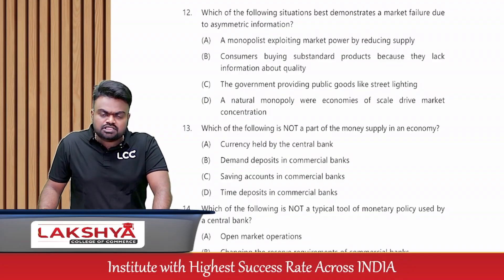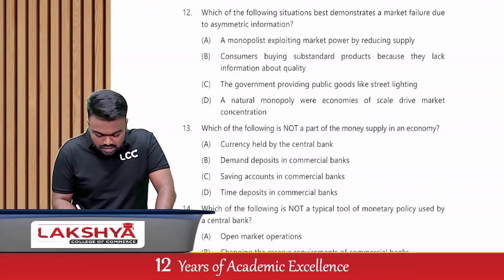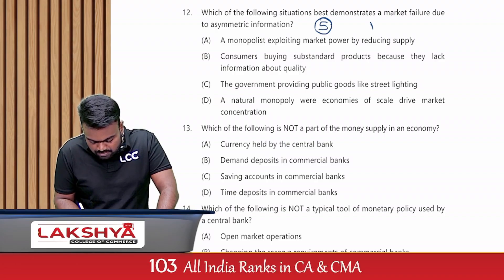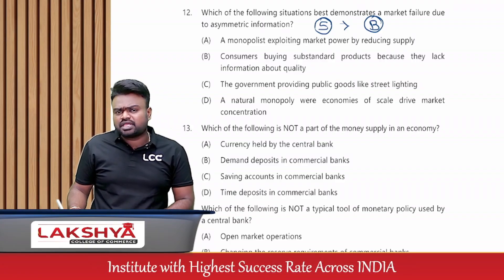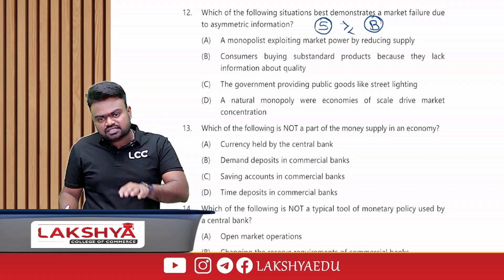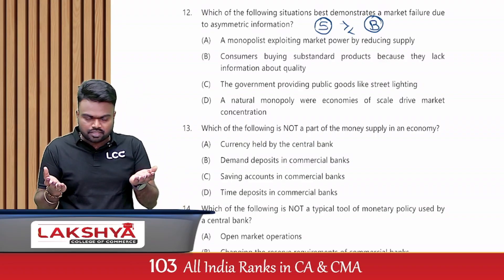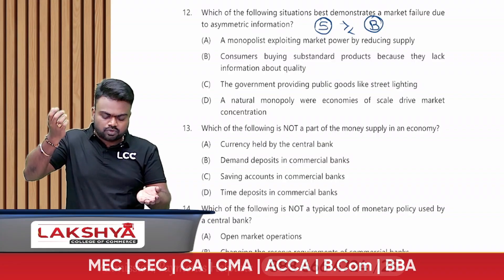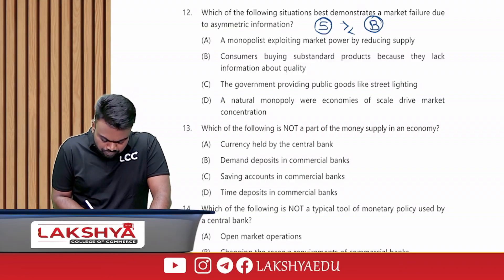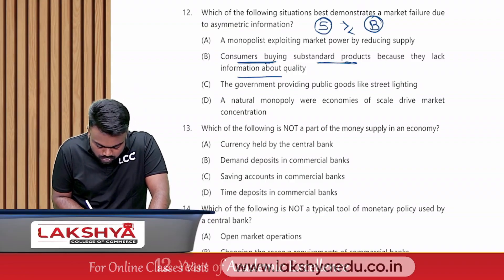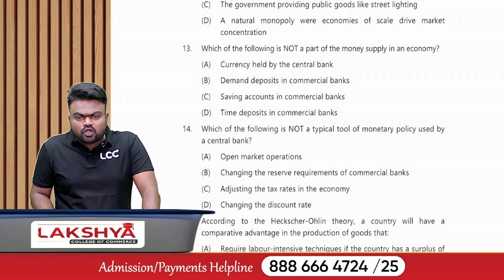Which situation best demonstrates market failure due to asymmetric information? Asymmetric information means that in any transaction involving a seller and buyer, if one party has more knowledge than the other, that is asymmetric information. In such a case, the consumer will buy substandard products because they lack information about quality. The answer is option B.